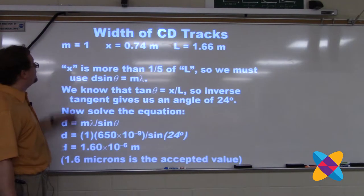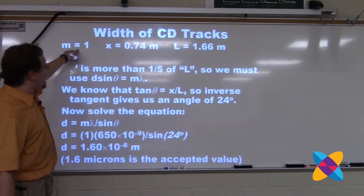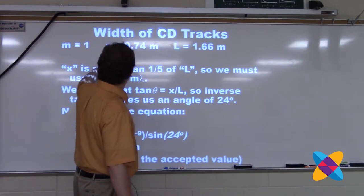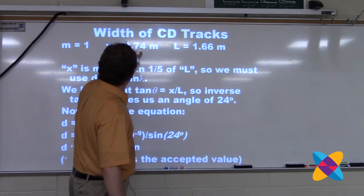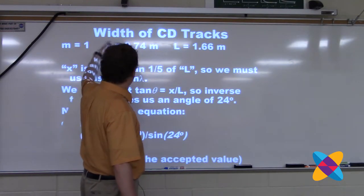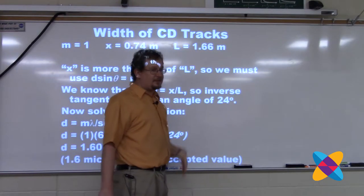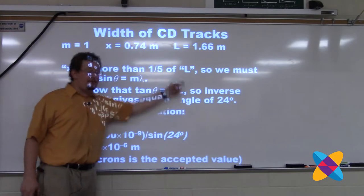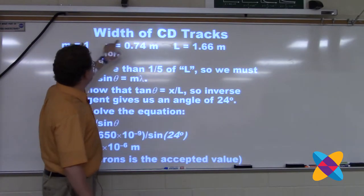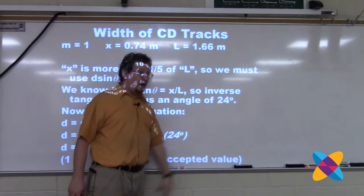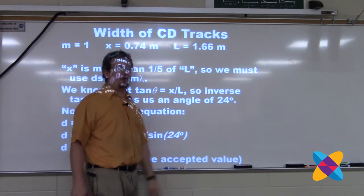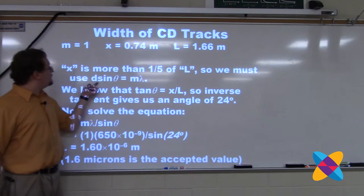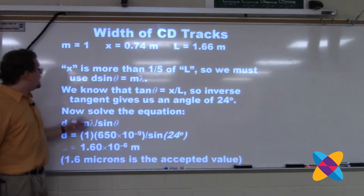I could only see one order of interference. The distance between the central maximum and the first order was the measured x. Notice that x is way more than 20% of L — I cannot use x over L in place of sine theta, as that would introduce too much error. So I have to use d sine theta equals m lambda.